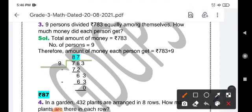You have to read the question very carefully in order to understand it. So let us start now. Nine persons divided—see, divided—₹783 equally among themselves. How much money did each person get?